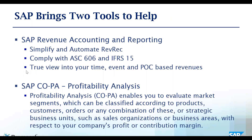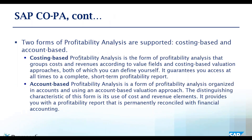SAP brings two tools to help in this process. The first is SAP Revenue Accounting and Reporting. SAP RAR helps simplify and automate your revenue recognition, bringing together all the tools to allow you to manage your revenue accounting in line with ASC 606 and IFRS 15, and it does it in an automated way. The second is COPA Profitability Analysis, which enables you to evaluate market segments and manage profitability down to sales organizations, business areas, or other dimensions. There are two forms of profitability analysis: cost-based and account-based, and it's important to understand those are two different approaches.